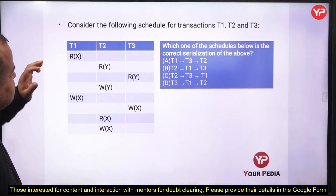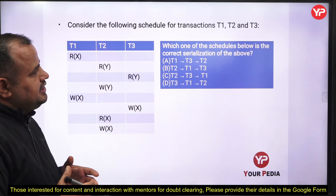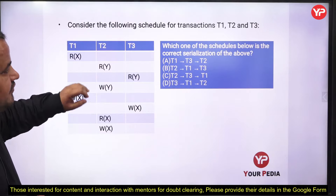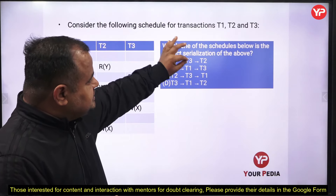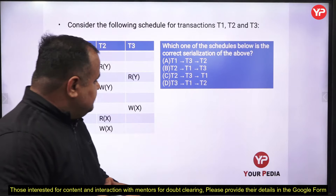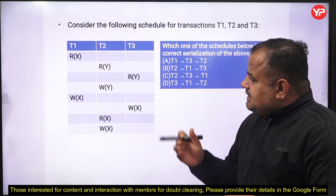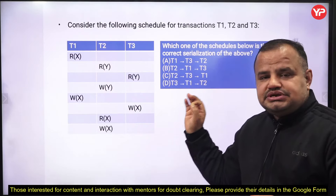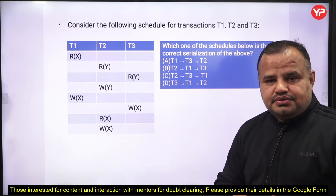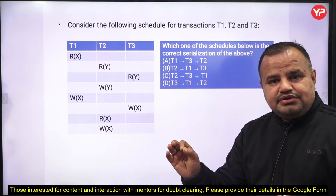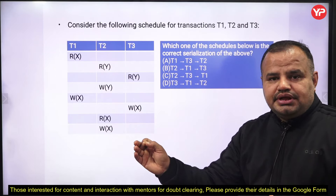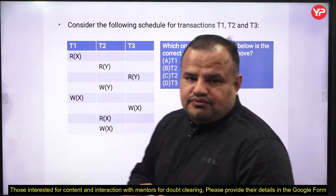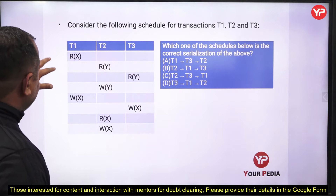The next problem: consider the following schedule for transactions T1, T2, and T3. We have to find out — if the given schedule is serializable, what should be the serial sequence? First, we need to check whether the given schedule is conflict serializable or not. If it is, then with the help of topological ordering we can find the equivalent serial sequence. So first, we need to generate the precedence graph.